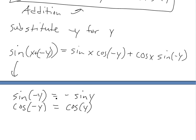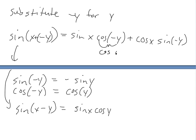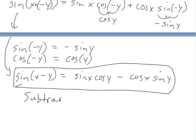Applying those properties, we get sine of x minus y equals sine x cosine y, because cosine of negative y is just cosine y, minus cosine x sine y, because sine of negative y gives us a negative. There we have it — that's the subtraction formula.